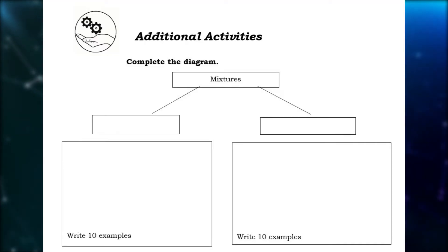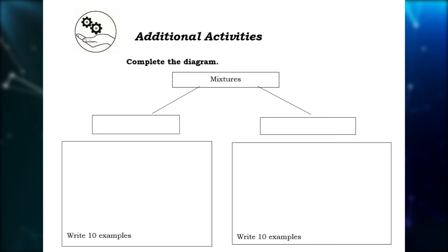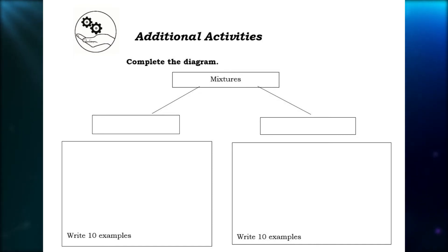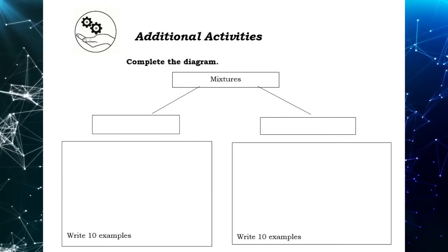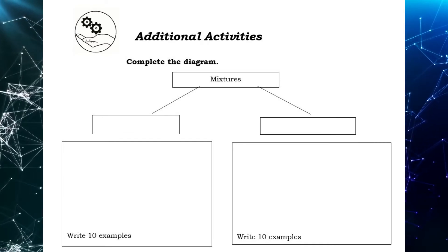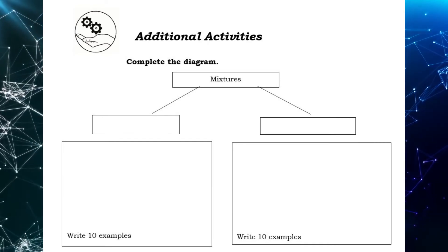I am not surprised if most of you got that all correct. Now as an additional activity, complete this diagram. To complete this diagram, you have to identify first the two types of mixtures. After having identified them, list down 10 examples for each type of mixture. Good luck!